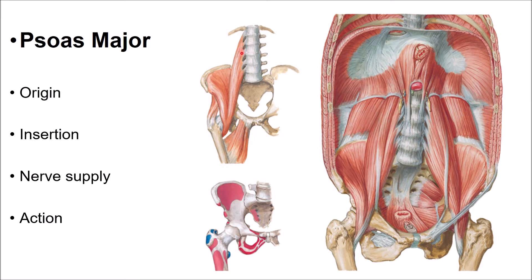After origin, this muscle runs downwards and laterally, crossing the ala of sacrum along the medial side of the iliac fossa. In the iliac fossa, it forms a tendon which enters the thigh posterior to the inguinal ligament. In the thigh, the tendon participates in the formation of the floor of the femoral triangle.